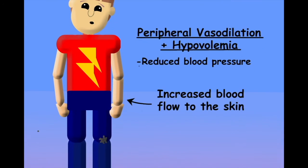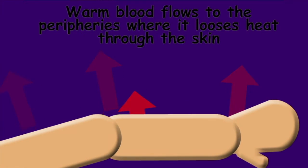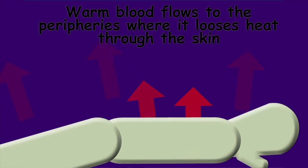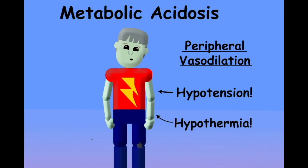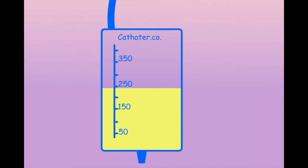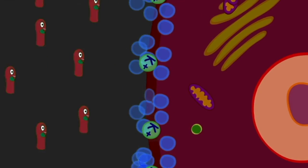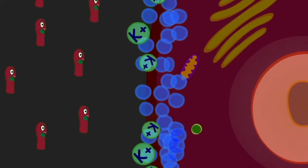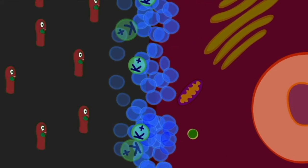The peripheral vasodilation is also causing more blood to flow to Tim's skin, where it loses heat. If Tim is not kept warm, he will start to become hypothermic. A side effect of Tim's high urine output is his body losing electrolytes, including potassium, with the urine. Tim's potassium levels are starting to become dangerously low, and the electrical conduction of his heart is starting to be affected, which is leading to his irregular heart rate.